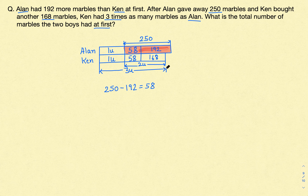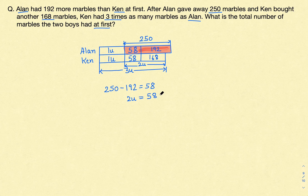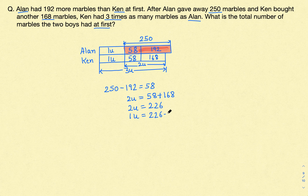We can clearly see from the model that 2 units is equal to 58 plus 168. So 2 units equals 226. You can use your calculator to find it. And so one unit will be 226 divided by 2, which gives us 113. So one unit is 113.